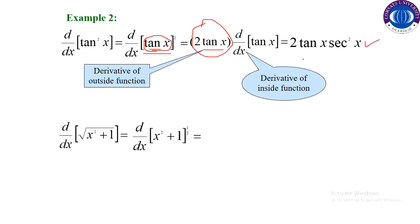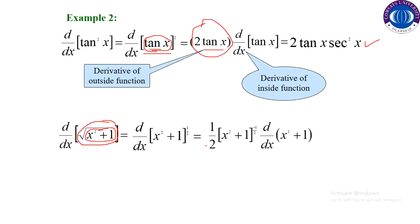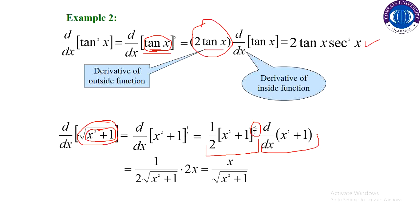In the next example, using the power rule on the outside function we get one half times x squared plus 1 raised to the power minus one half. This is the derivative of the outside function. The derivative of the inside function is 2x. The two cancels with the two and we are left with x divided by the square root of x squared plus 1 as the derivative.